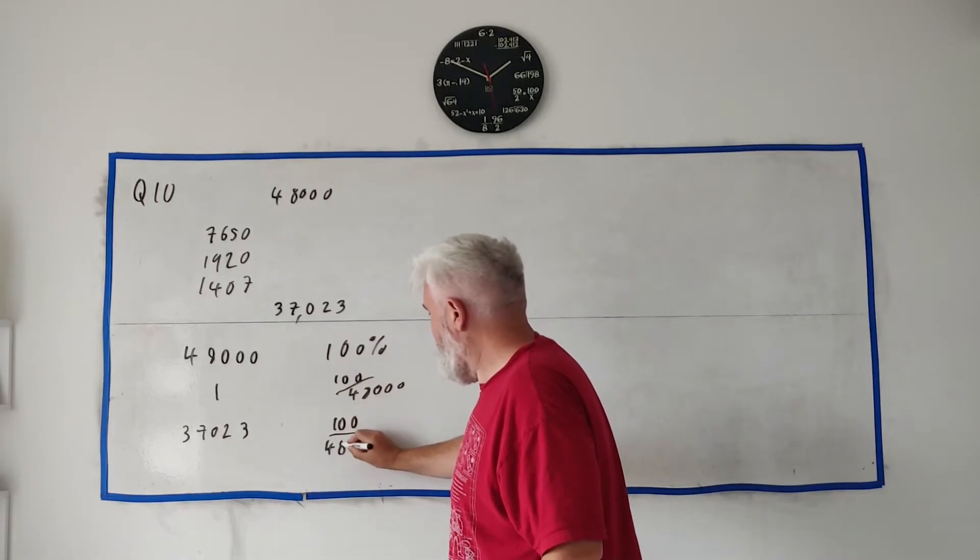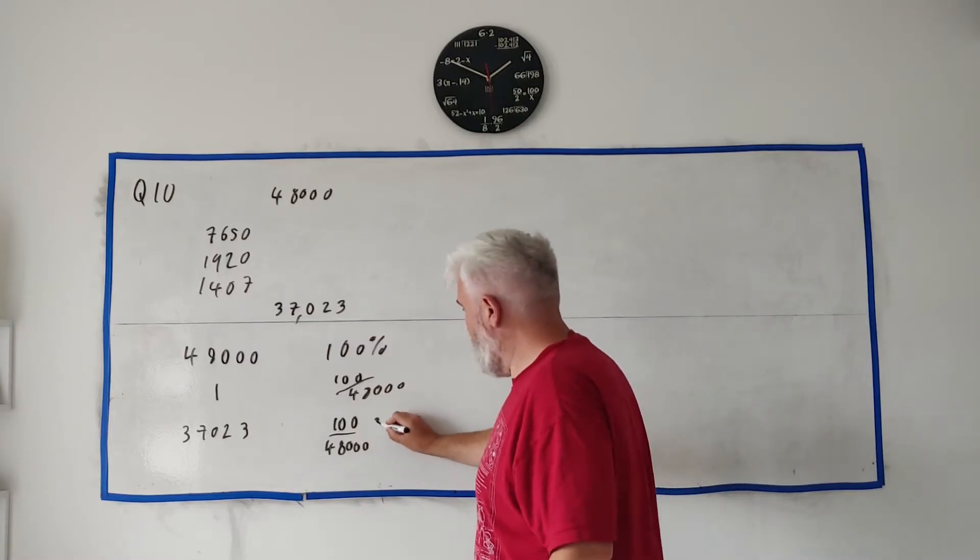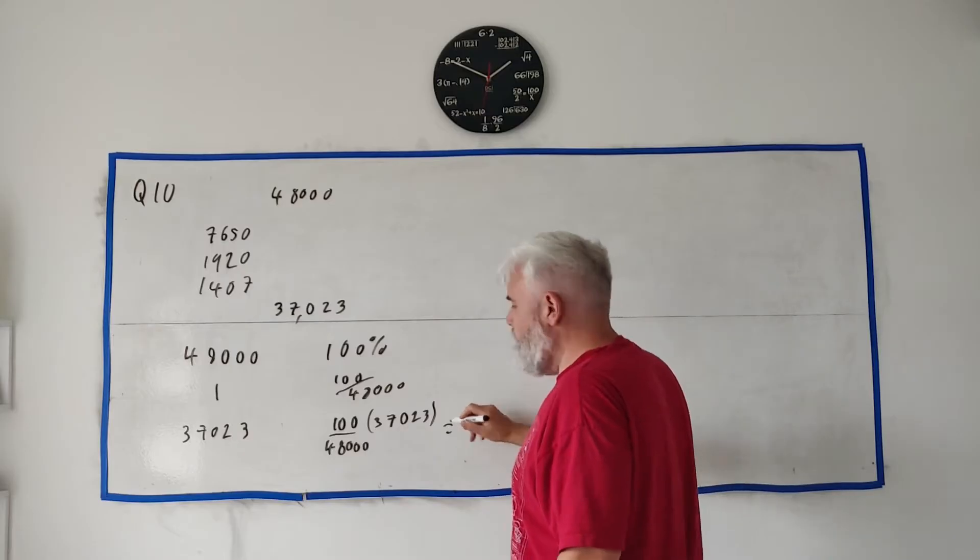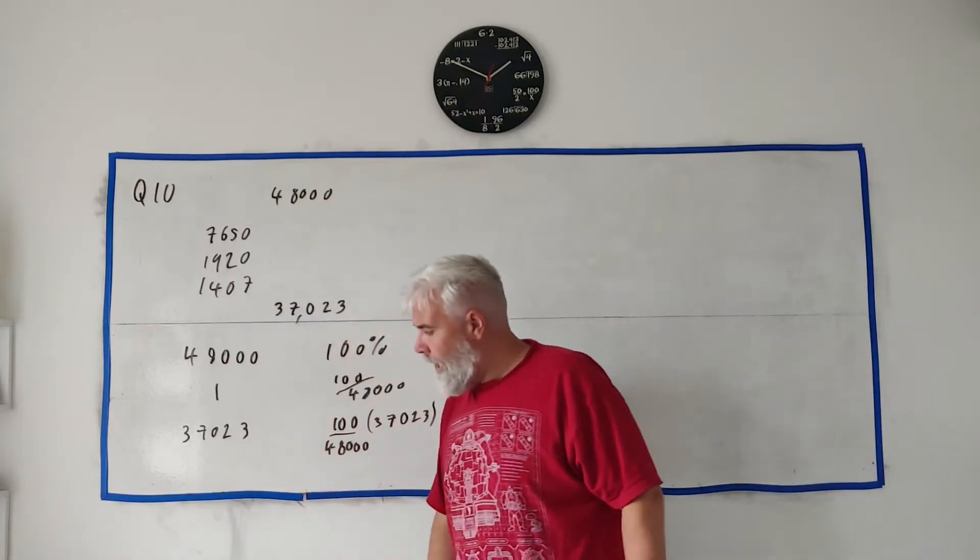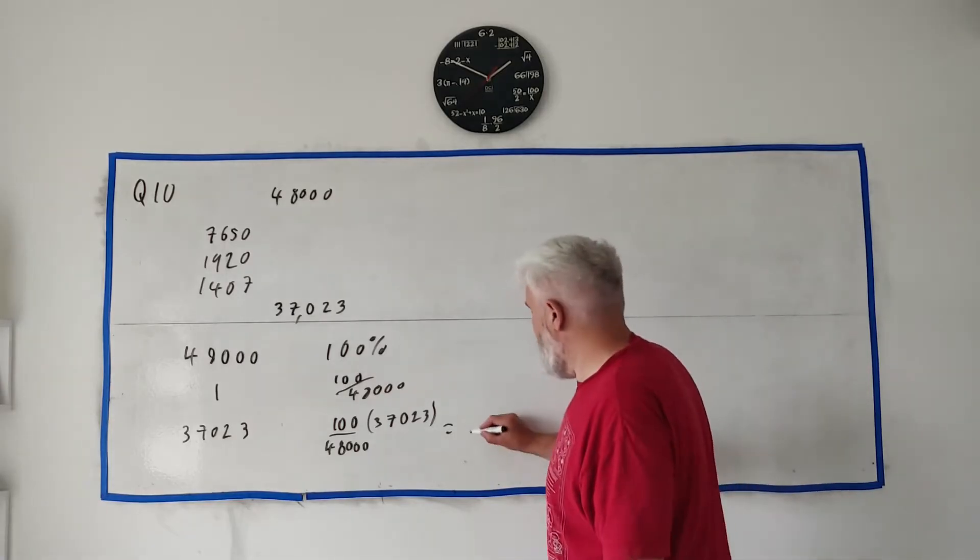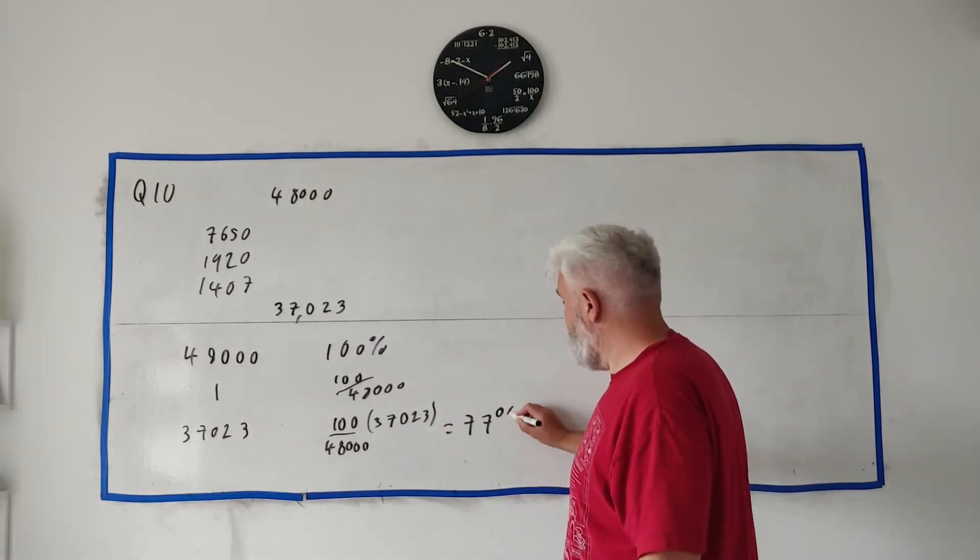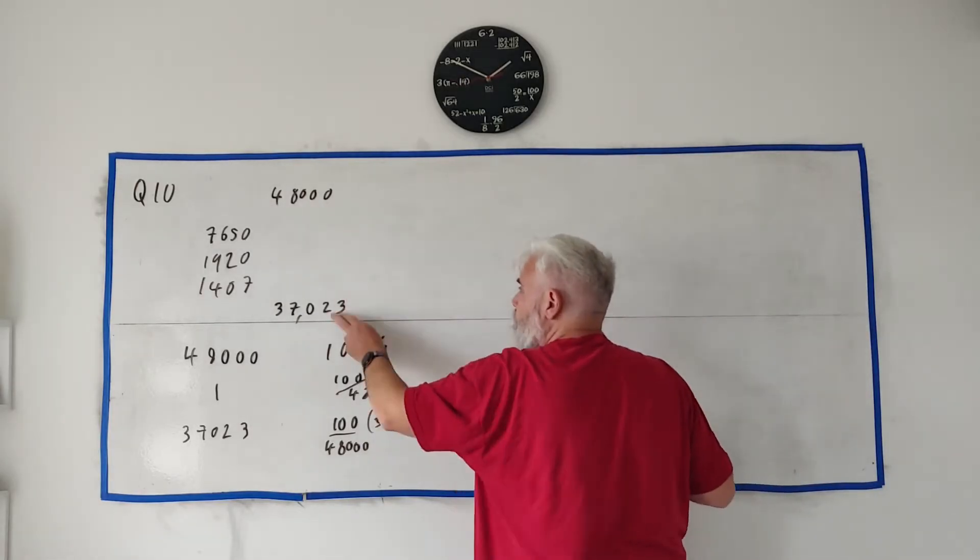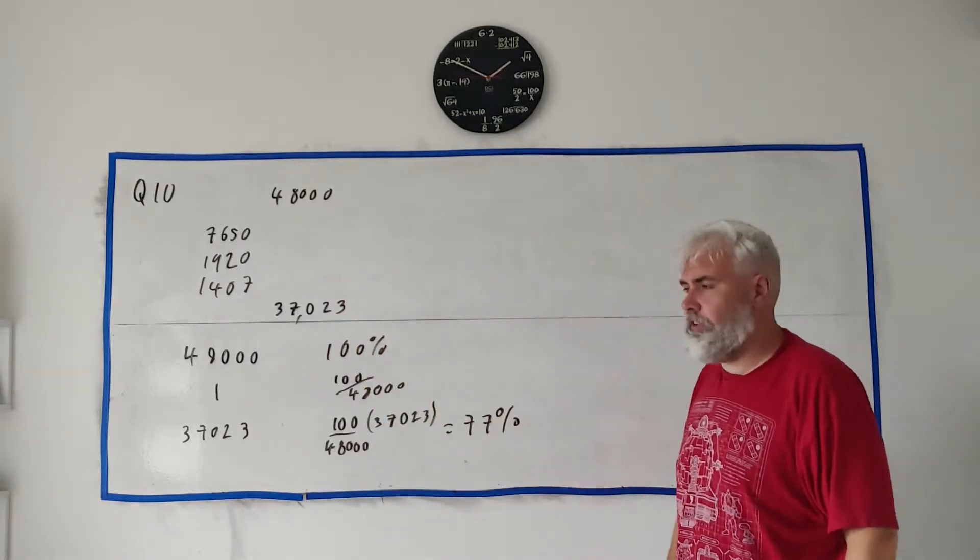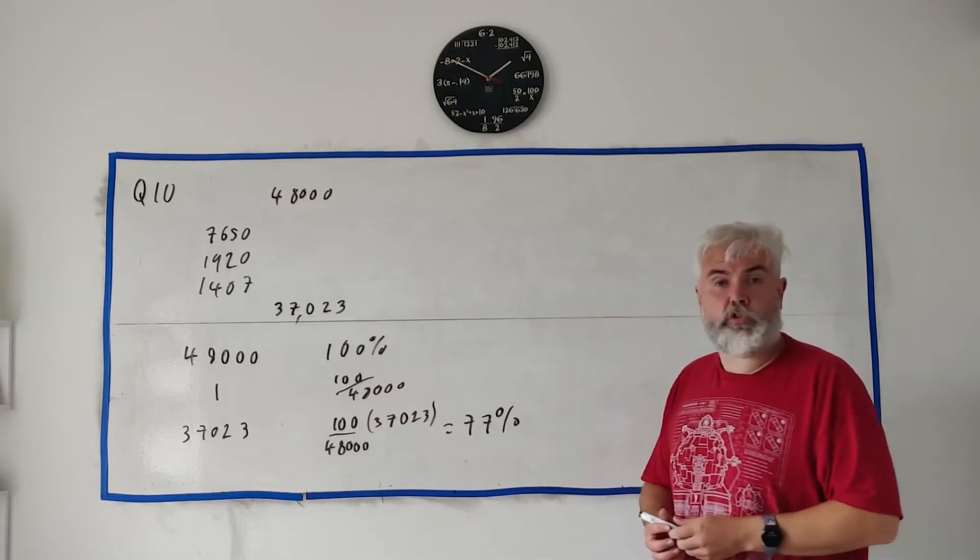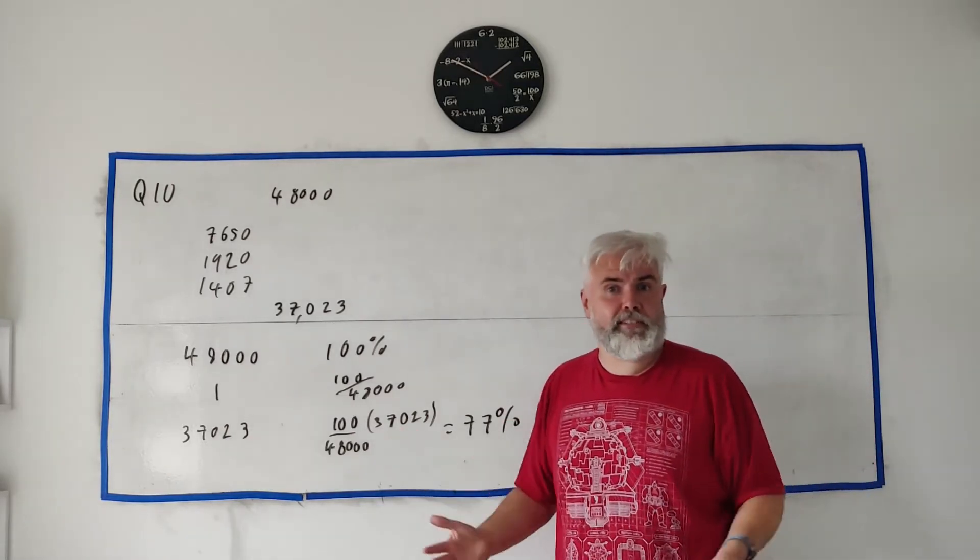Put all that into a calculator and round it off to the nearest percentage, and you get 77%. So of your 100% of your money, you only got to keep 77% of it. Or you could think of that as they took 23% of your money in taxes.